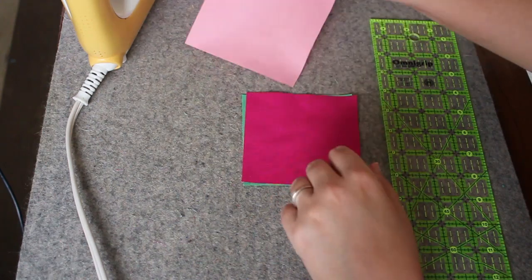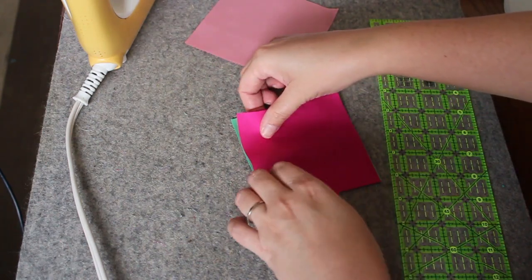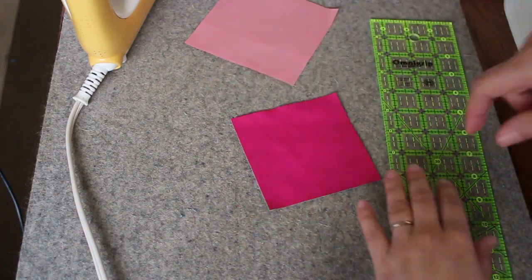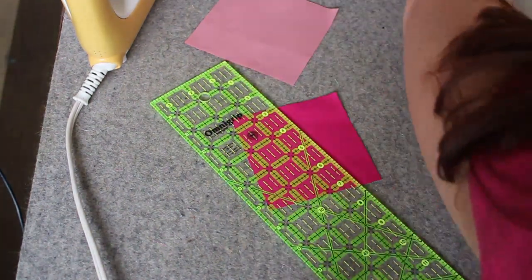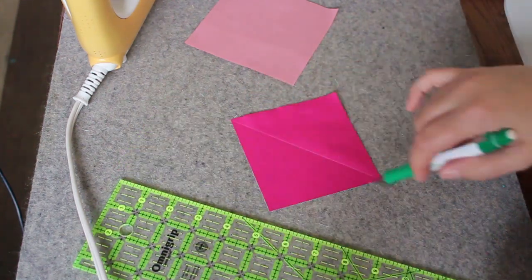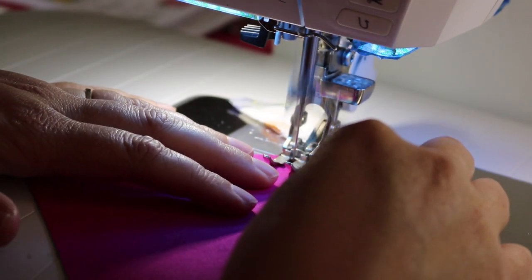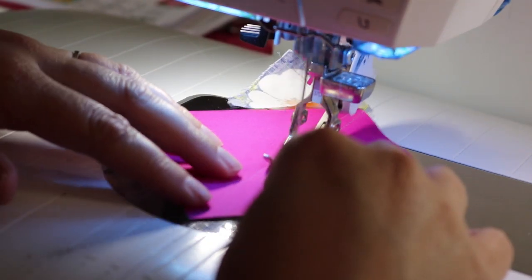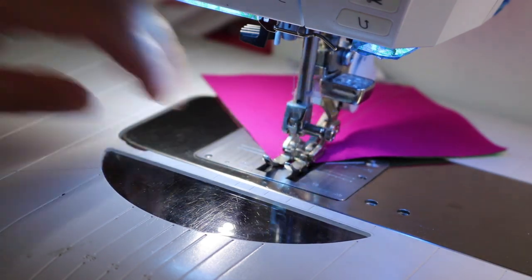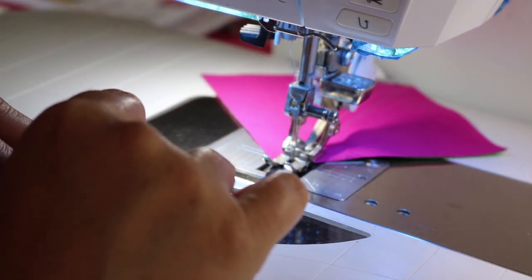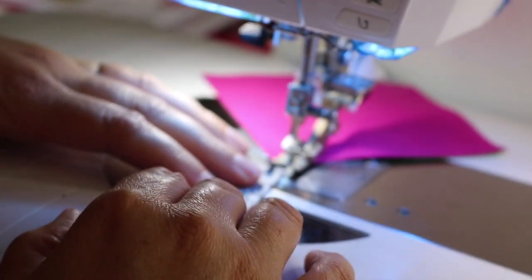For the sugar bowl quilt block I'm going to start by putting the center square aside and then I'm going to draw a line on the back of one of these pieces diagonally across. There we go. Now I'm going to stitch a quarter inch away on each side of this line. And I'm using my leader ender blocks because my thread likes to get sucked up into my sewing machine and this keeps that from happening. And now the other side. And I've got some more little leader ender blocks.